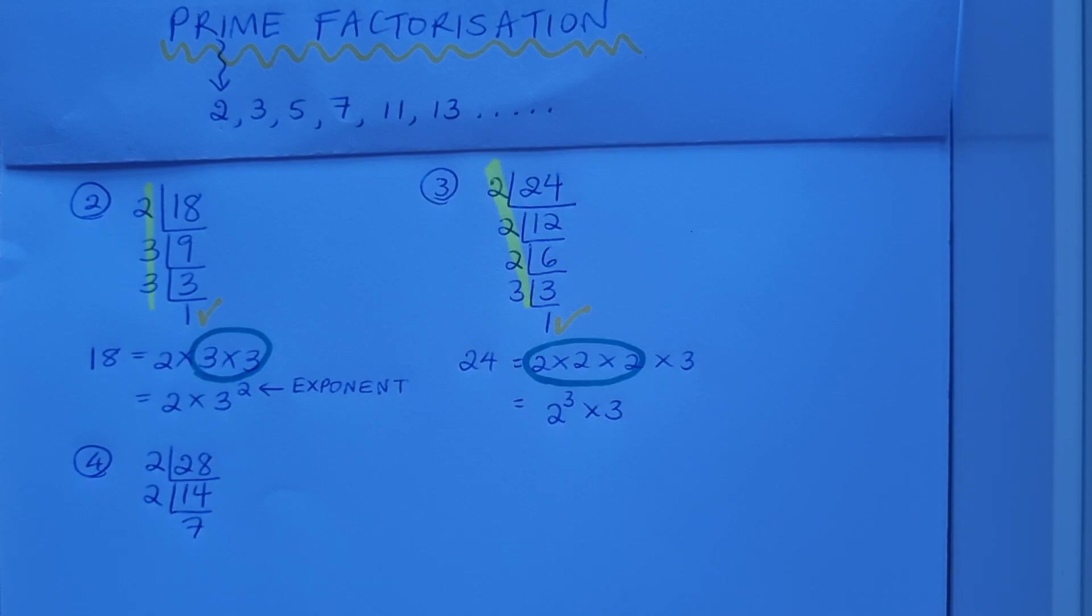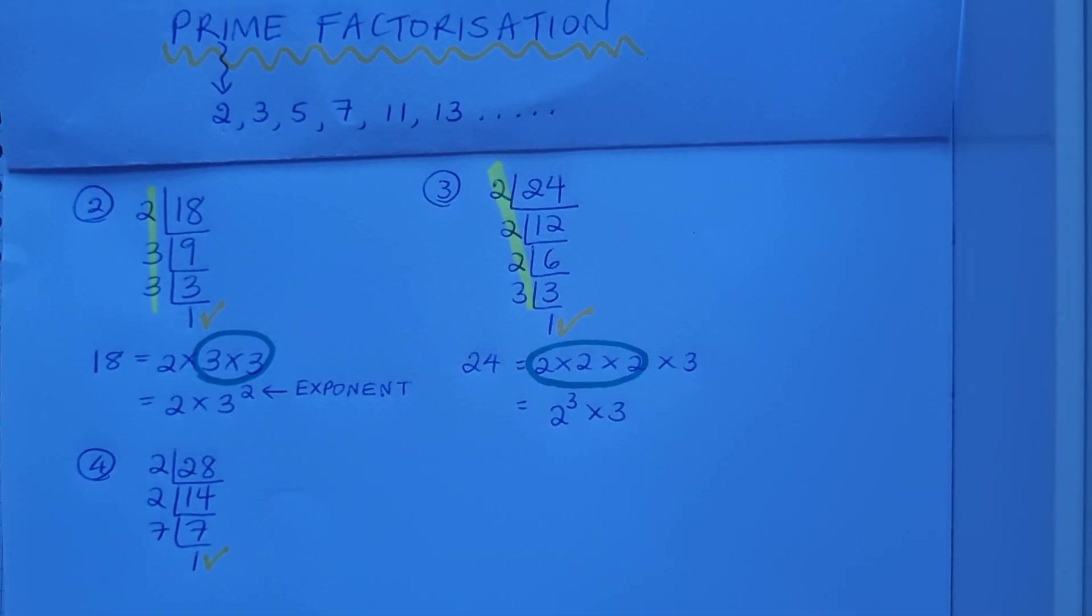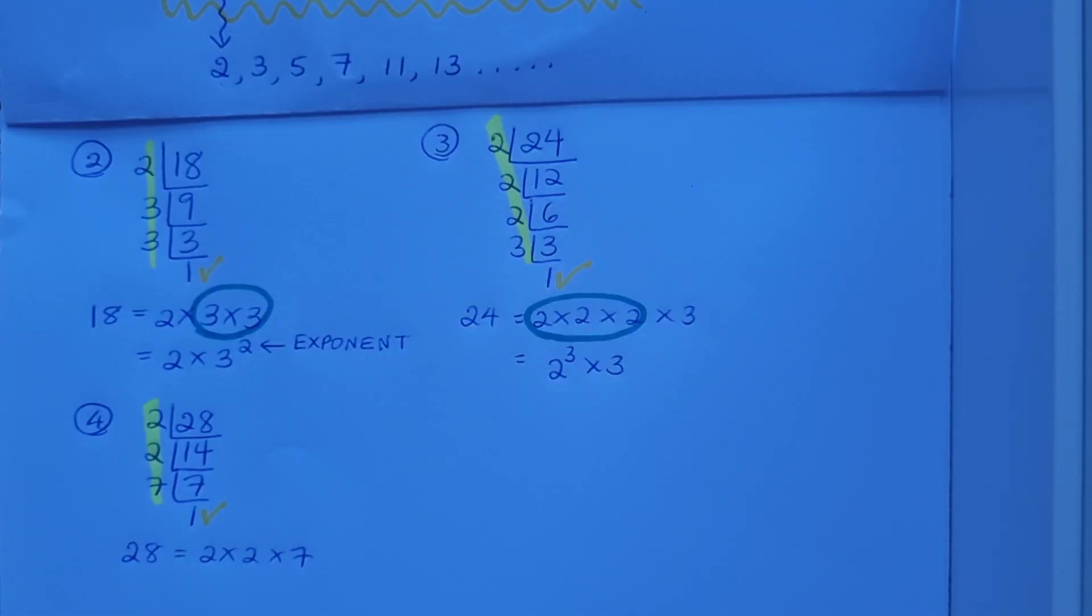And then 2 will go into 14, and that goes in 7 times. And then 7 will go into 7. Once I got to 1, I'm done. There's my prime factors. I can write 28 as the product of its prime factors: 2 by 2 by 7, or 2 squared by 7.